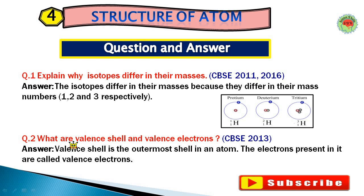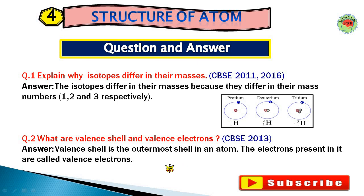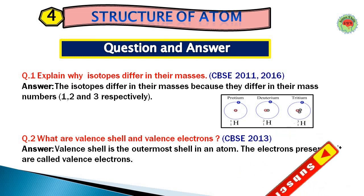Question number two: What are valence shell and valence electron? The valence shell is the outermost shell in any atom. The electrons present in it are called valence electrons, also called outermost electrons.